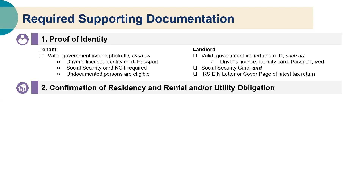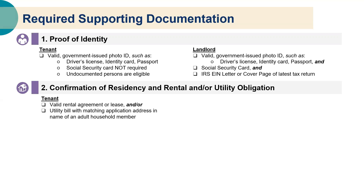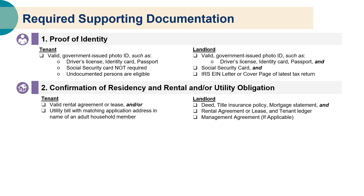Second, confirmation of residency and rental and or utility obligation. Tenants must submit a valid current or expired lease agreement and or utility bill with the matching application address in the name of a household adult member, depending on whether the applicant is applying for rental assistance, utility assistance, or both. Applicants applying for future rent on a dwelling they have not yet entered into a lease agreement will work with the Housing Authority of Cook County to provide a self-attestation form. Landlords may submit deeds, title insurance policy, or mortgage statements to verify property ownership, and a copy of the rental agreement lease or tenant ledger.